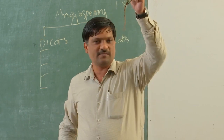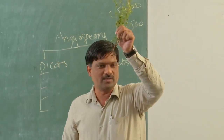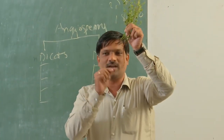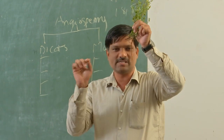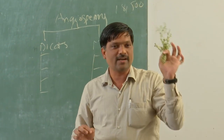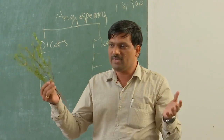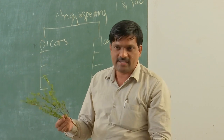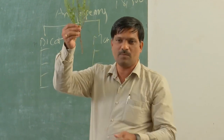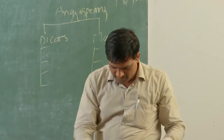Look at this root — there is a single main root, called a tap root system, and this is the character of a dicot. So even if you don't have any seeds, just with the help of the root you can differentiate dicots from monocots.